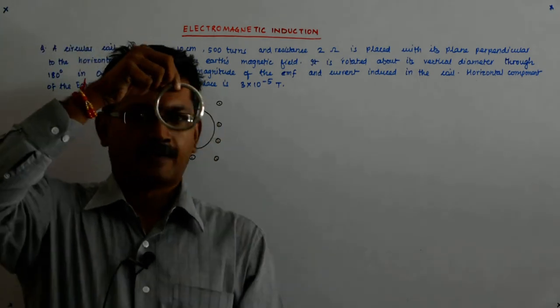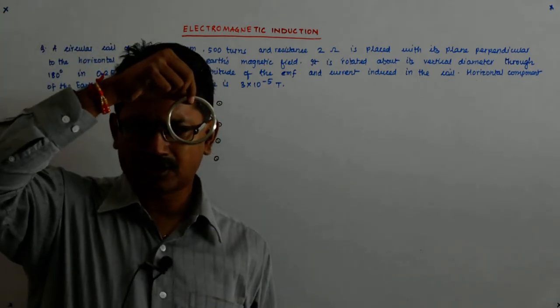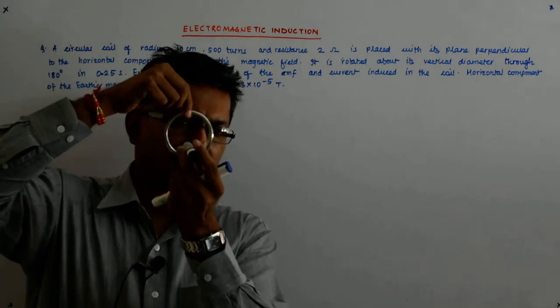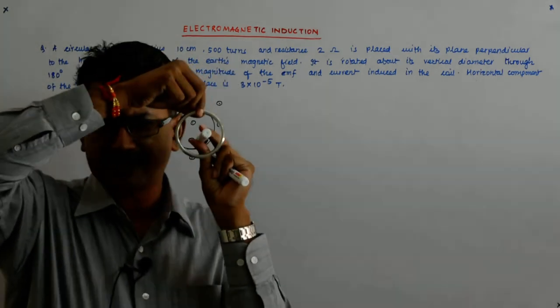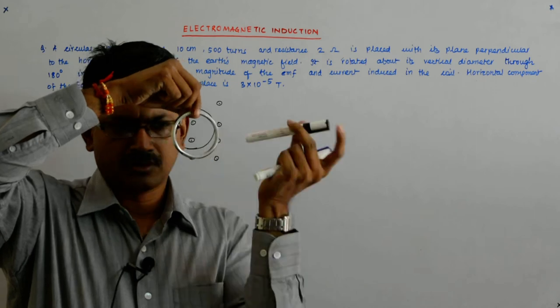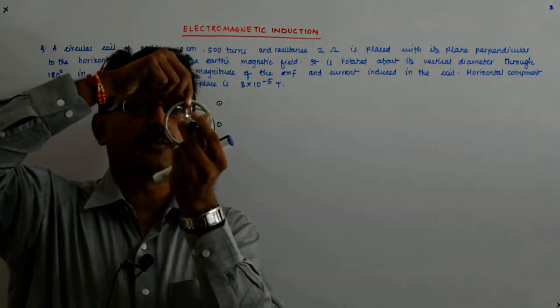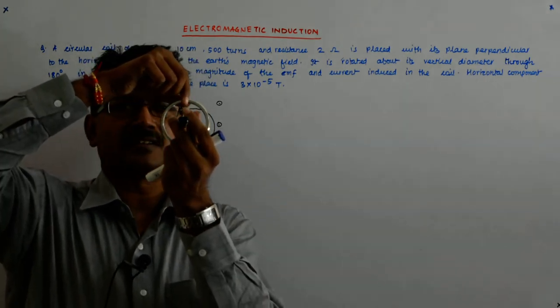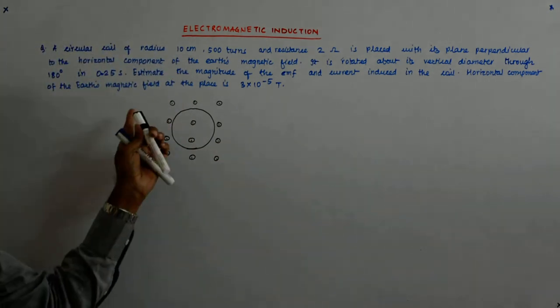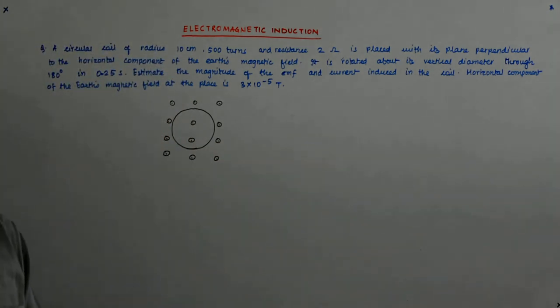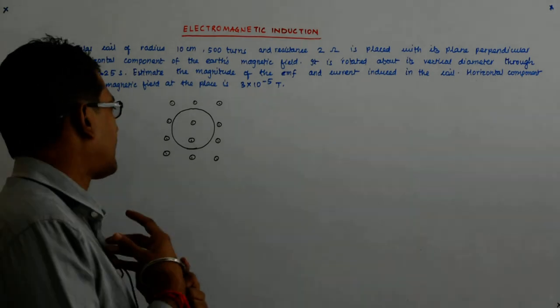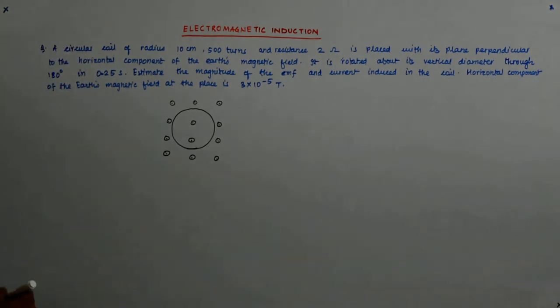I consider my area vector to be something like this. So this is my circular coil. I could have also considered it like that, but here I consider it to be in the same direction as the magnetic field.